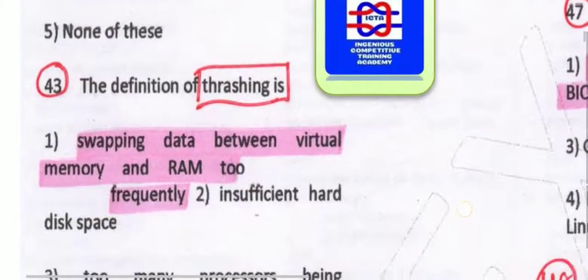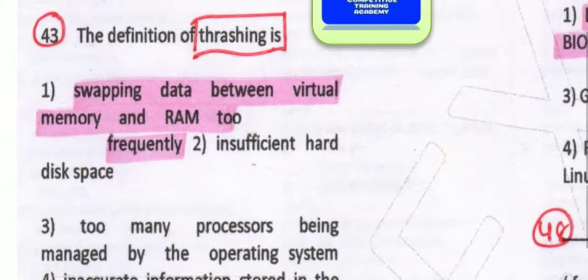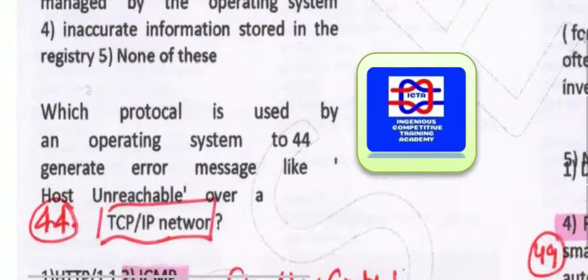Thrashing is defined as swapping data between virtual memory and RAM too frequently. Whatever this swapping of data between virtual memory and RAM done too frequently is known as thrashing.